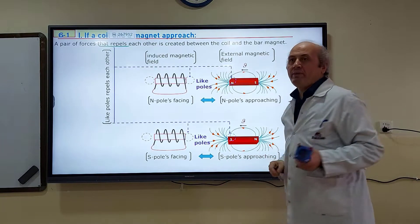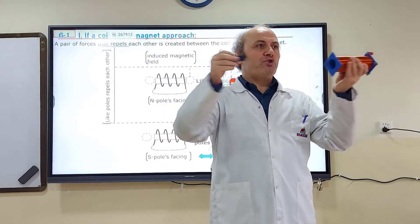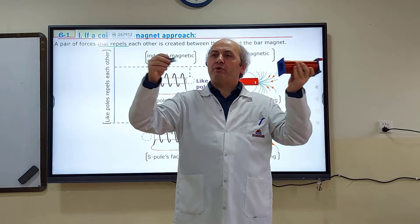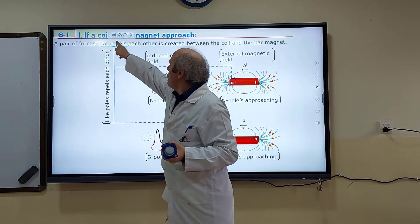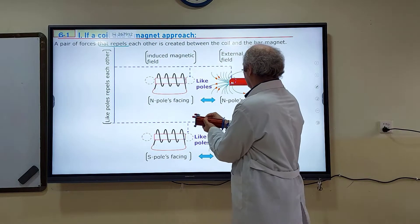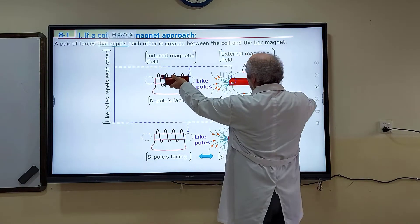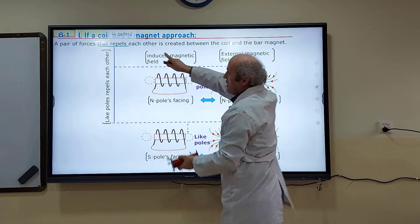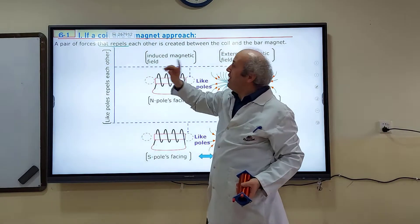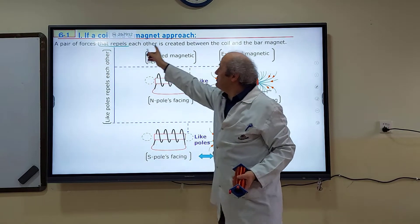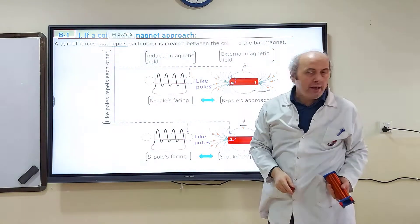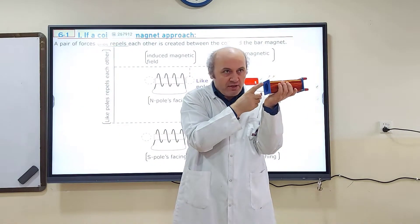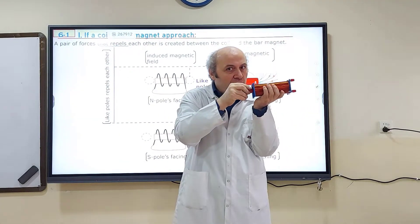There are two cases that cause a magnetic flux change: you make them approach, or you make them move away. First, we will study the case where they approach. If a coil and a bar magnet approach each other, a pair of repulsive forces is created between the coil and the bar magnet. When the N pole is approaching, this pole of the solenoid is going to be N, so they will try to repel each other.